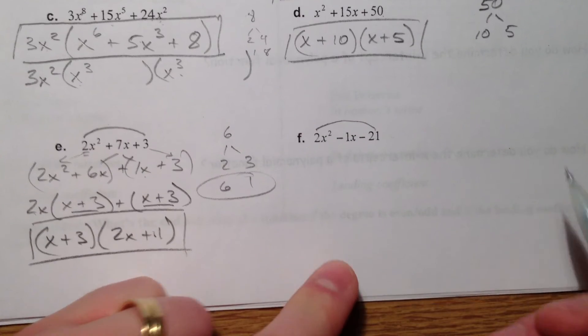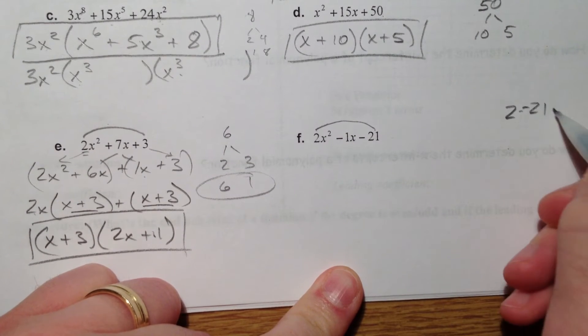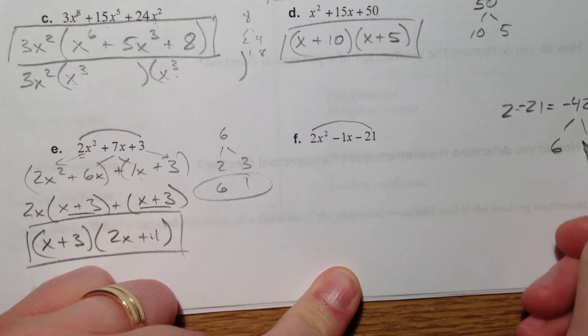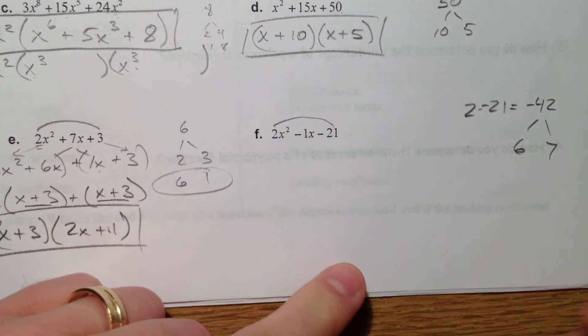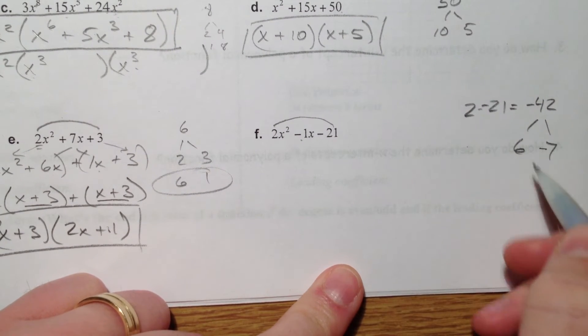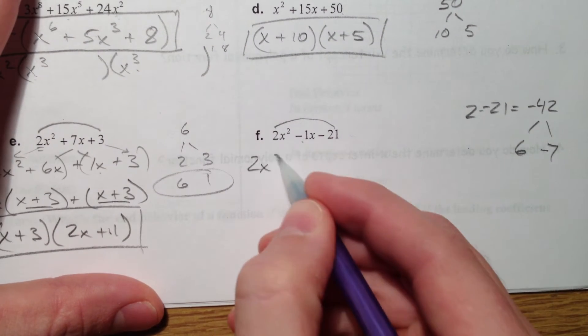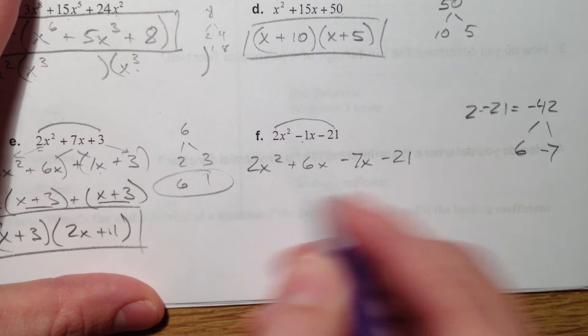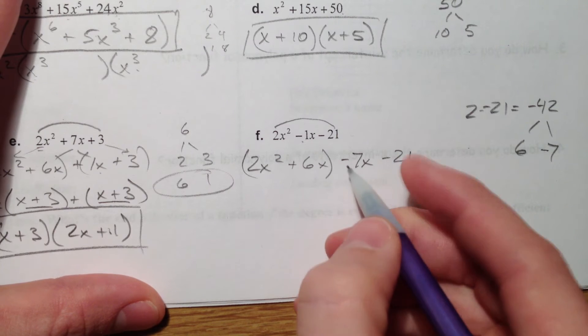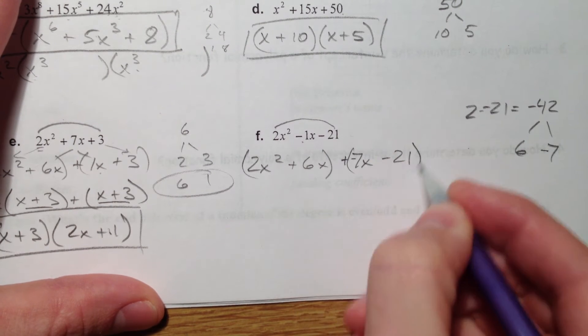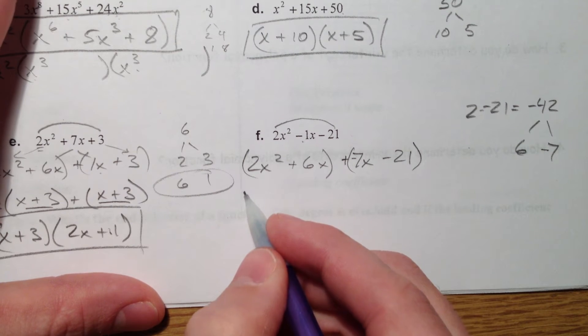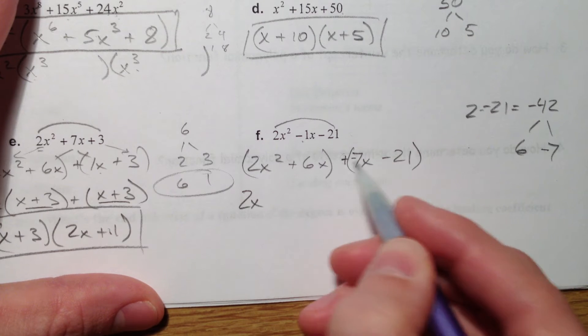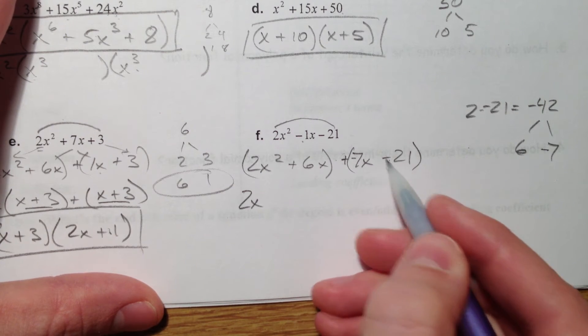Alright. Last one on this page. 2 times 21. Negative 42. 7 times 6. So it's 42. Negative 1. So negative 7 because those add. So 2x² + 6x. What I do when I have this minus here is I usually suck the minus inside. So I just made that plus and negative. If you don't, it will change if you just leave the minus out front.